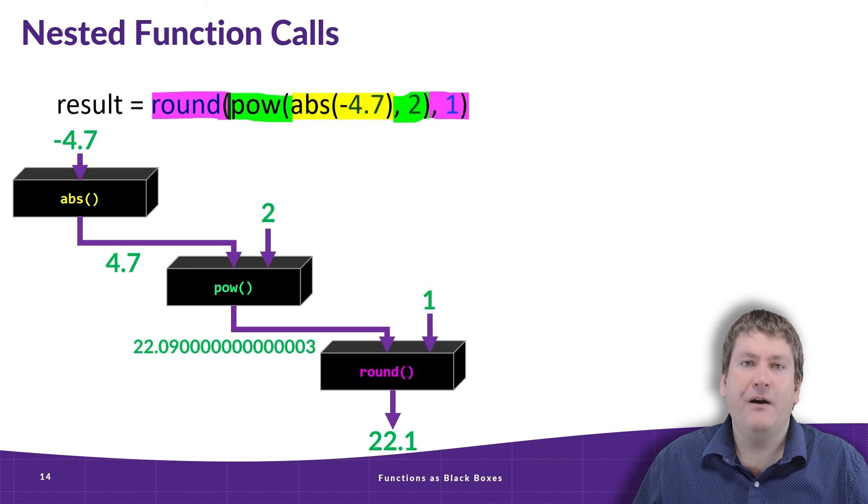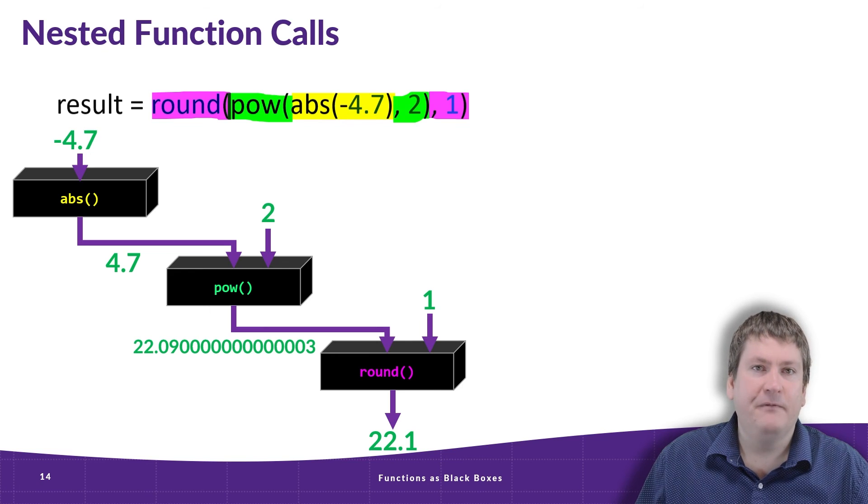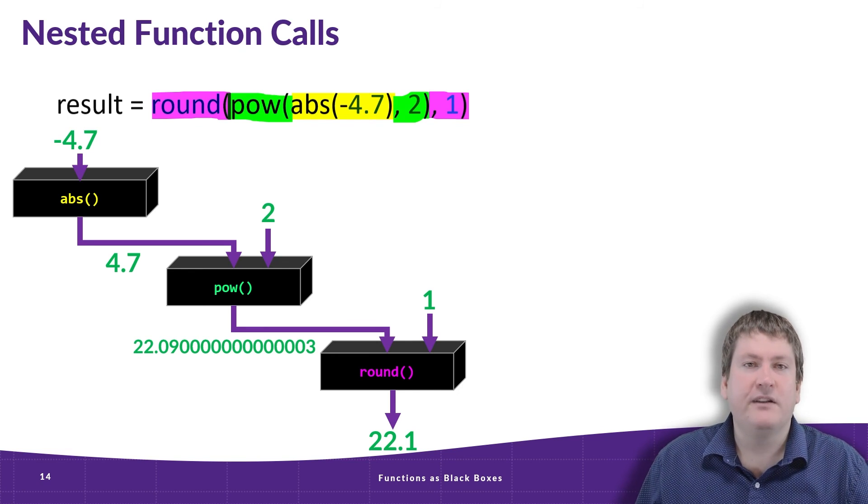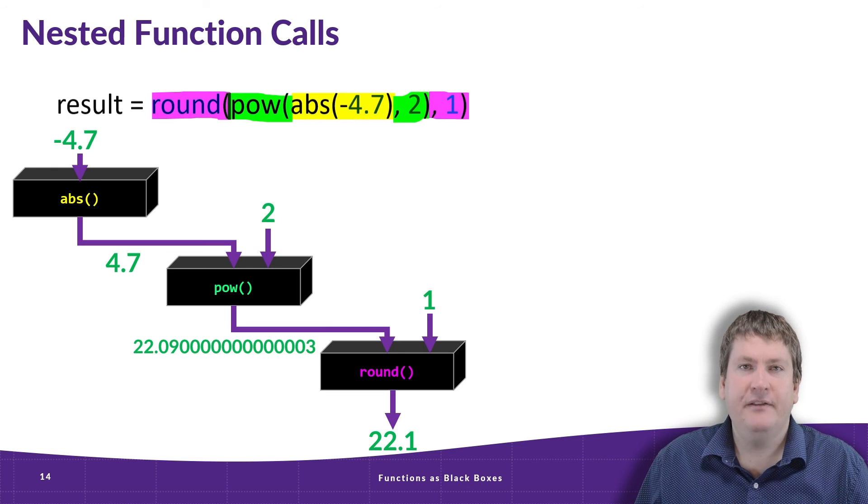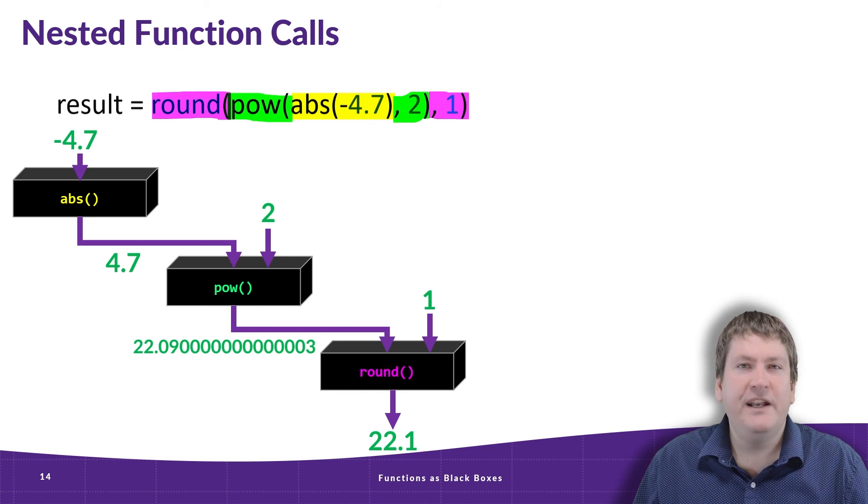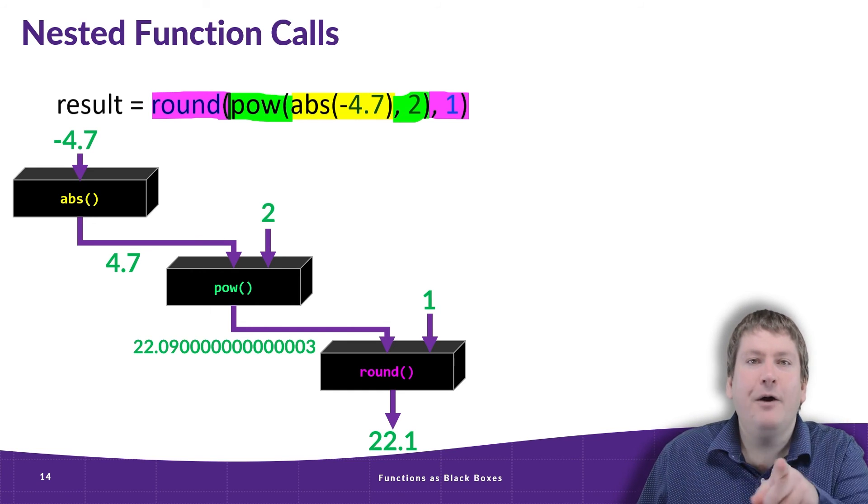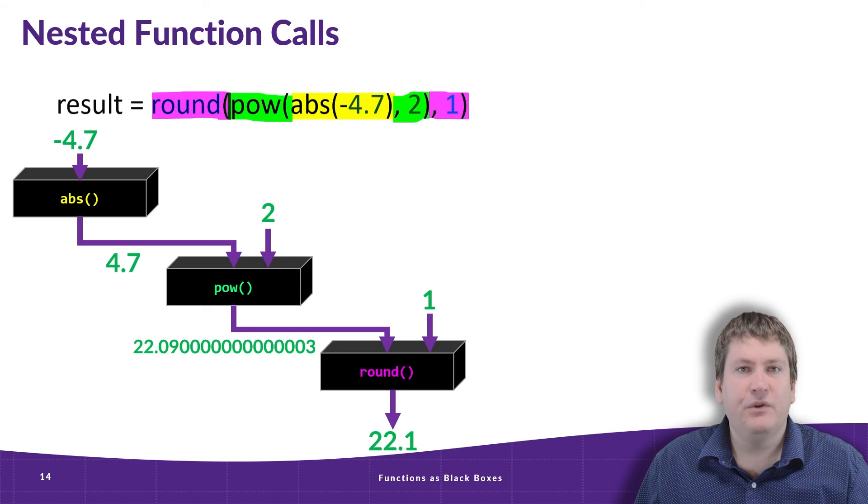I will point out, however, that usually in your code, you want to split these calls up a little bit, maybe store the results in variables, and then use that in the next call, rather than all pushed together in one line like this. There's nothing wrong with putting it all together in one line like this, but it makes it a little bit harder to read because you sort of have to trace where the parentheses are. Is that 2 part of power or is that 2 part of round? So it is better to split it up and store the results in variables.